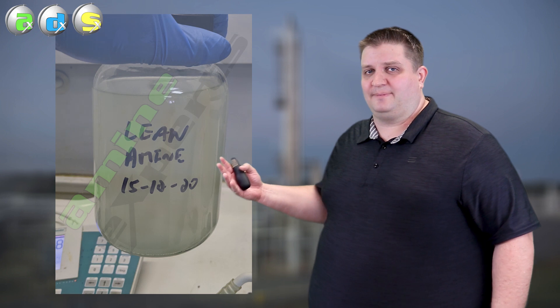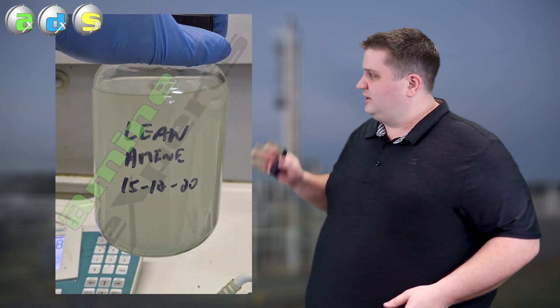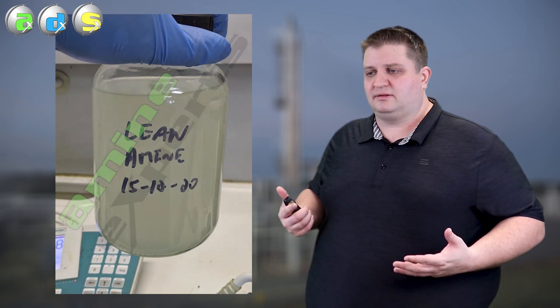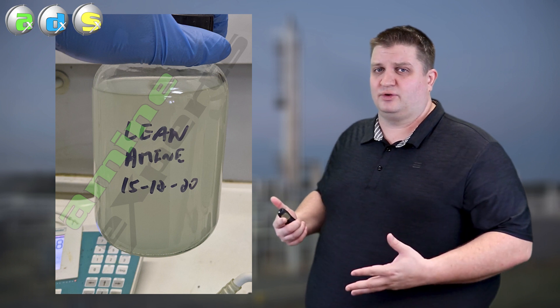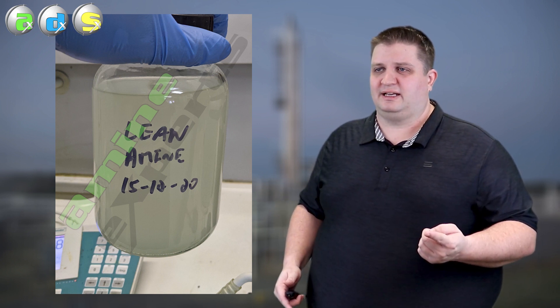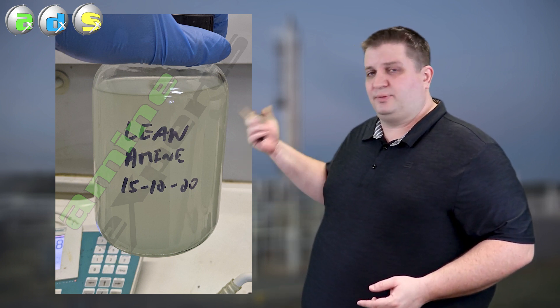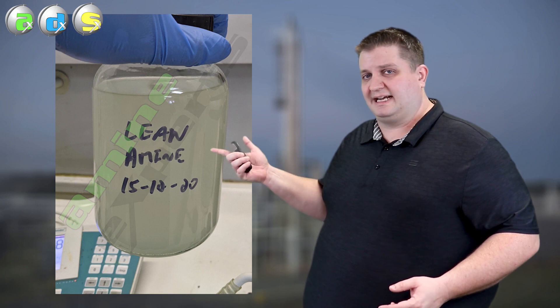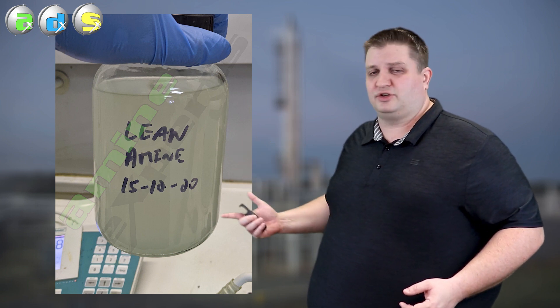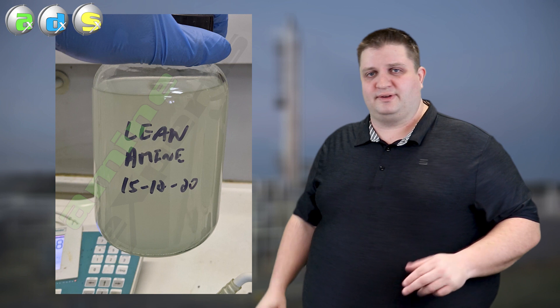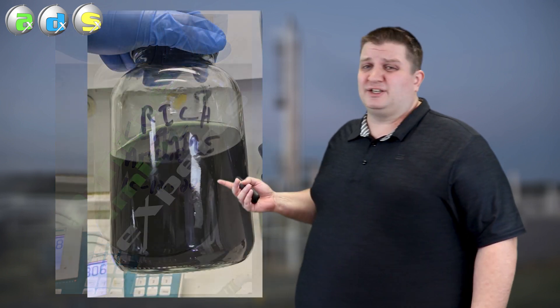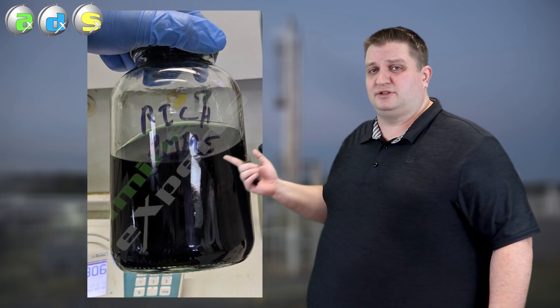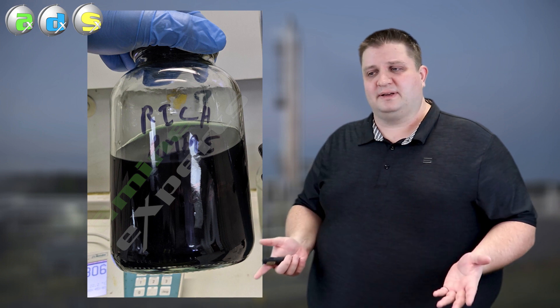So now you've pulled yourself a nice clean sample. Everything looks good. You're really happy with the results you got. Well does that mean everything's fine and you're ready to rock? Well no not necessarily. We're going to take a case here where we pulled this sample from a system, the lean sample. Everything looked happy. Everything looked good. The amine strength came out nice. We were pretty happy with that. But then we took a rich sample and you got this ugly dark green thing. Well what happened?